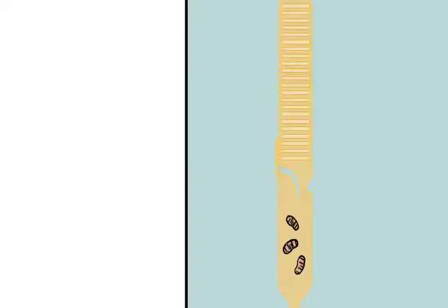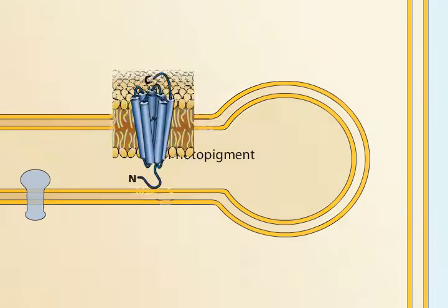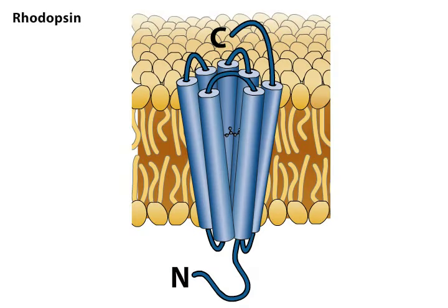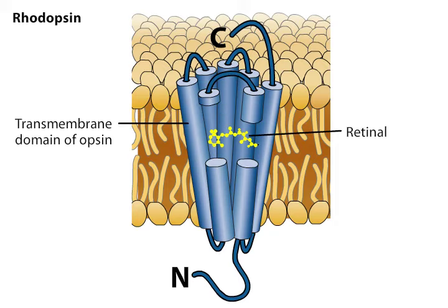The photopigments lie within the disc membranes of the outer segments. In rods, the photopigment is called rhodopsin. The seven transmembrane domains of the protein portion of the molecule, called opsin, traverse the membrane bilayer. The opsin forms a pocket in which the light-absorbing portion of the photopigment, a molecule called retinal, resides. The photopigments in the rods and the three types of cones differ in the protein portion of the molecule, which tunes retinal to absorb specific wavelengths of light.